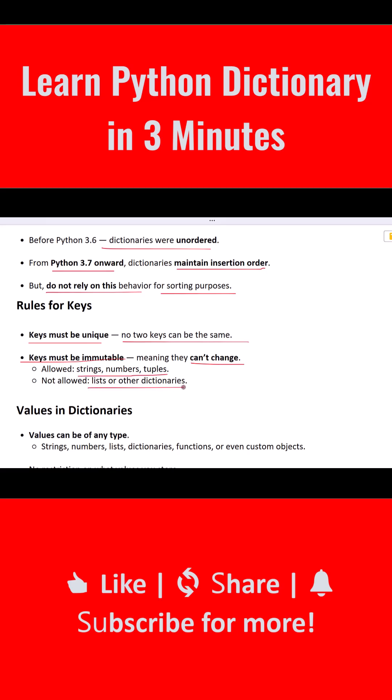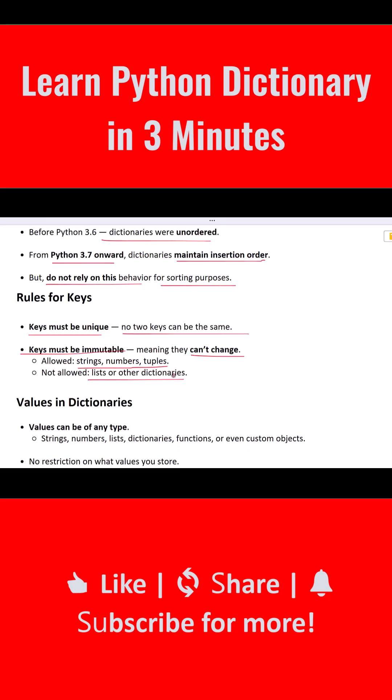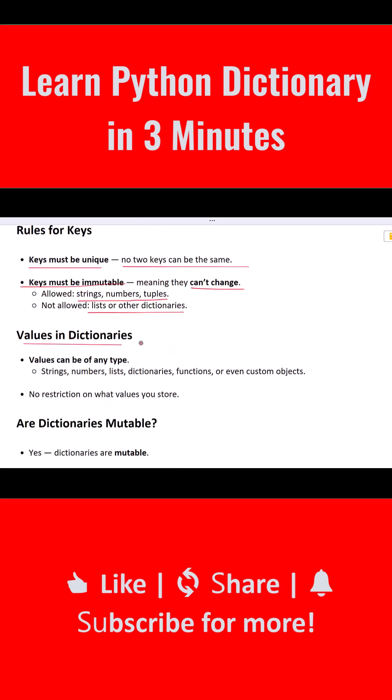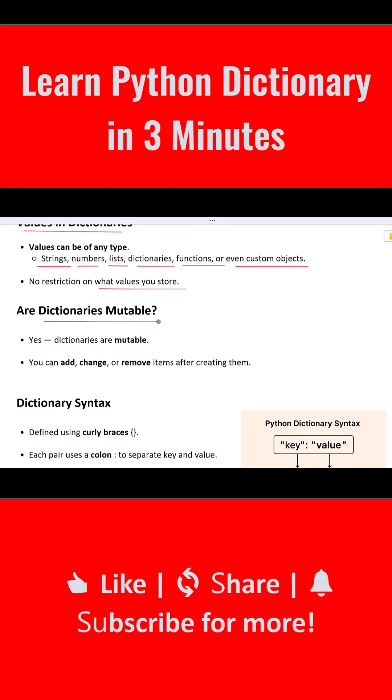Values can be anything. Values in a dictionary can be any data type. They can be strings, numbers, lists, other dictionaries, or even functions and objects. There are no restrictions on values.